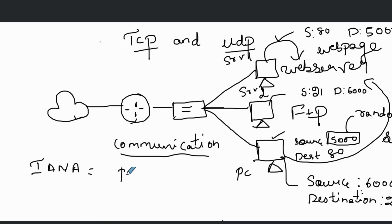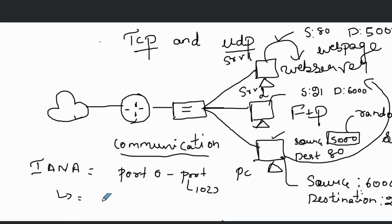The well-known port numbers range from port 0 to port 1023. These are used for major protocols like HTTP and FTP and are very strictly regulated. Registered port numbers are in the range of 1024 to 49151. Finally, the range of 49152 through 65535 is used for ephemeral ports.